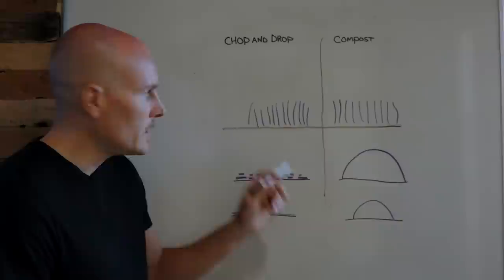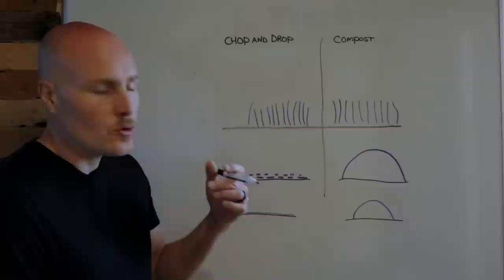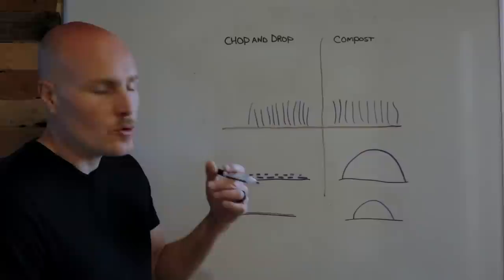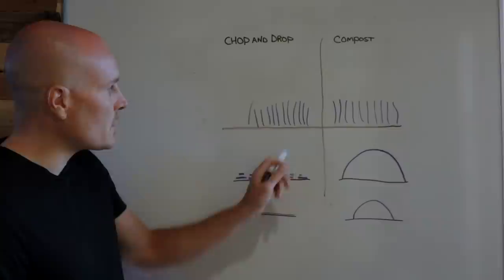Now that could be with a scythe, it could be by just a hand sickle, it could be you mow it down, you could flail mow it, you could string trim it, you could crimp it, you could just trample it, but some way you're taking all this biomass and you're getting it to go from a vertical position into a horizontal position on the surface like this.